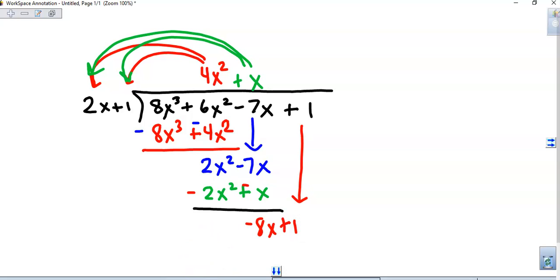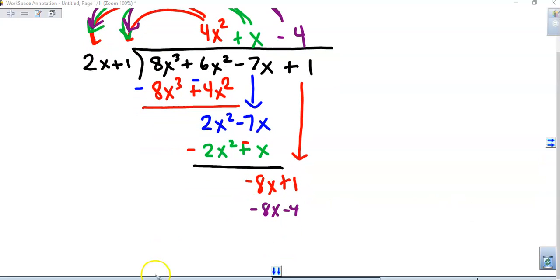What times 2x will give me negative 8x? Negative 4. Distribute the negative 4 and write the product. That's negative 8x minus 4. Draw the line, change the sign.